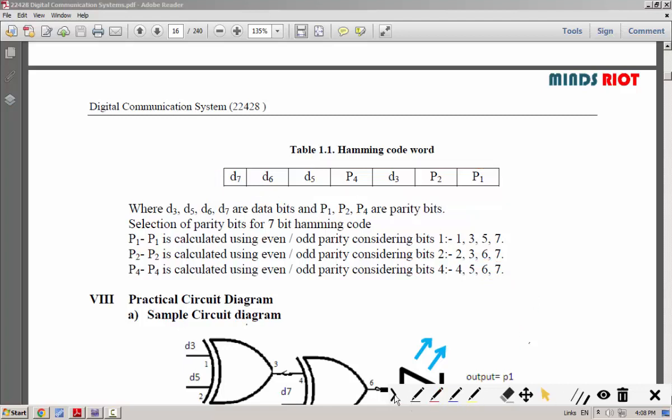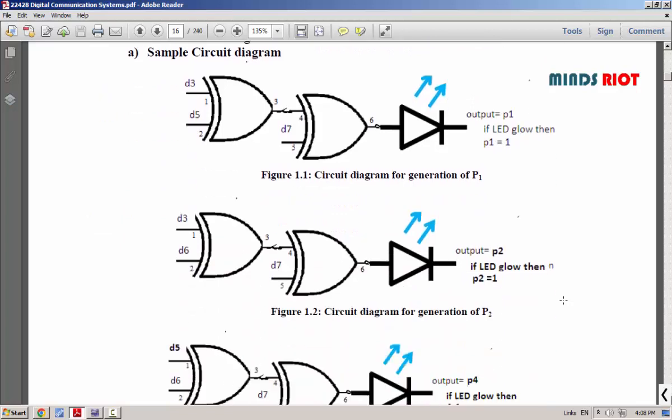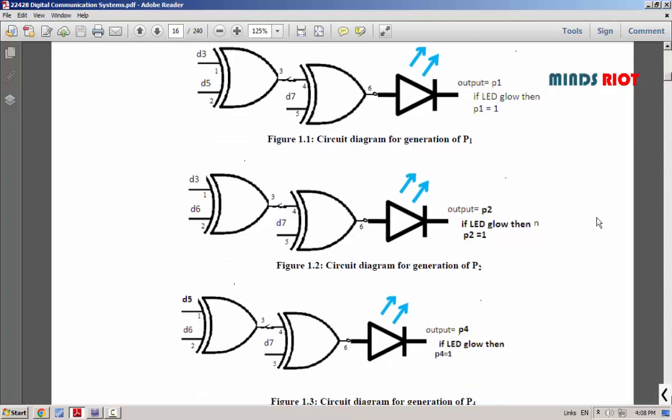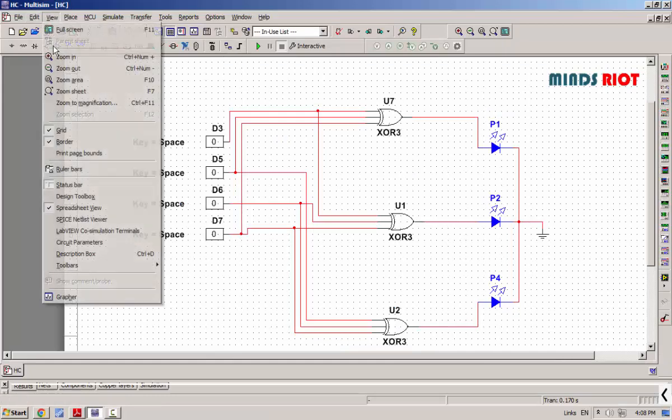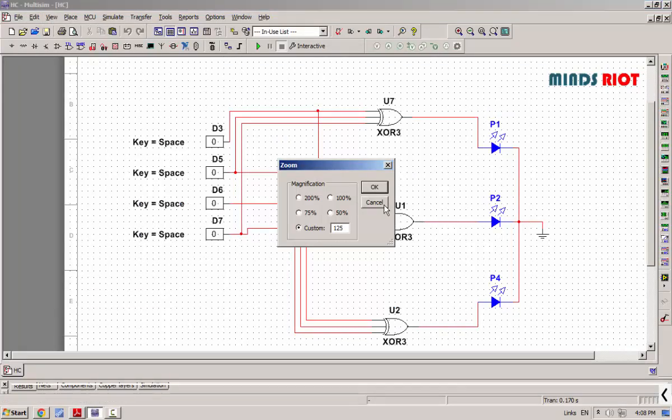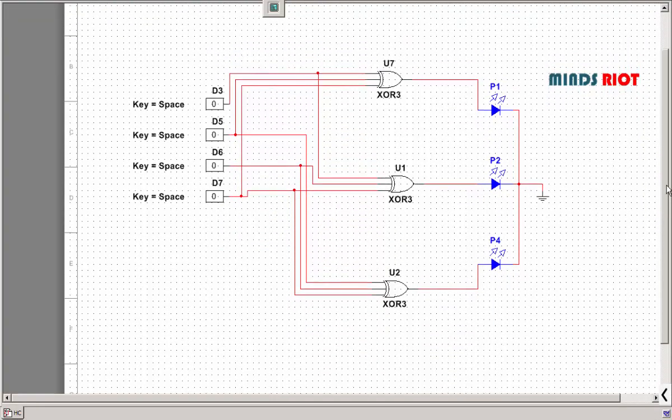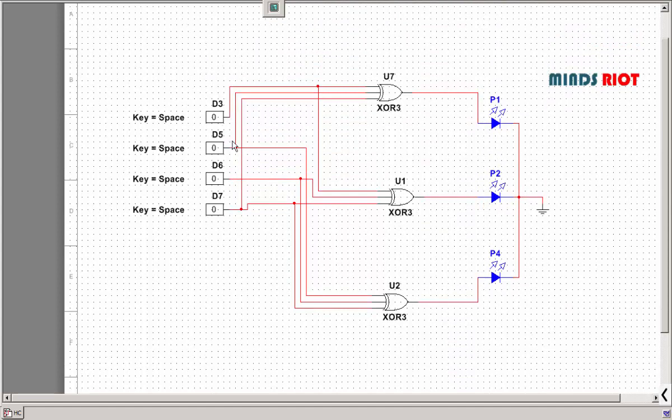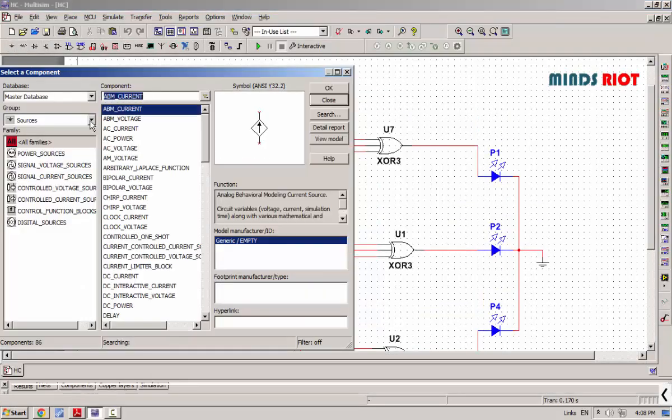Now, we will have to design this circuit. To design this circuit, we are going to implement this with the Multisim software. In the Multisim software, we will have to do the connection as per the circuit diagram that we already have in our manual. I have already designed the circuit due to time constraint.